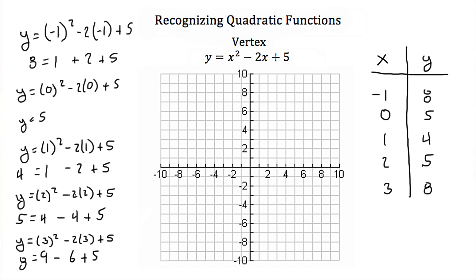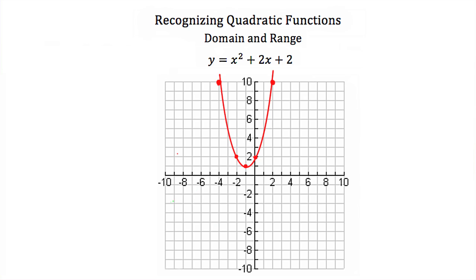Now let's plot these points. We go to negative 1 on the x-axis and a positive 8 on the y, so we have a point up here. 0 and 5 is right here. 1 and 4 is right here. 2 and 5, and then 3 and 8. Now we're going to connect these points with a smooth curve, so the graph of our quadratic equation will look something like that. The key point to notice is this point right here — this is our vertex. It is the lowest point, or the heel of this u-shape or parabola. This vertex is also the point where the parabola is symmetrical across.